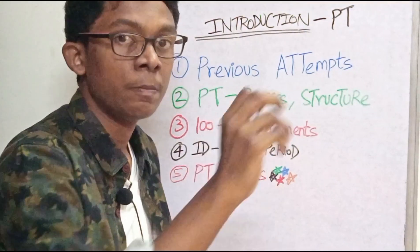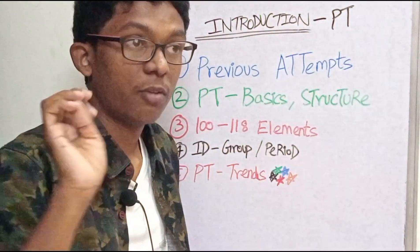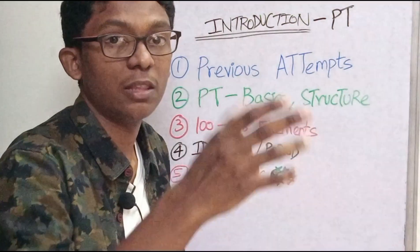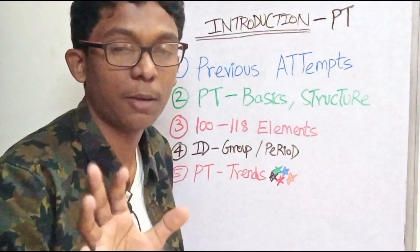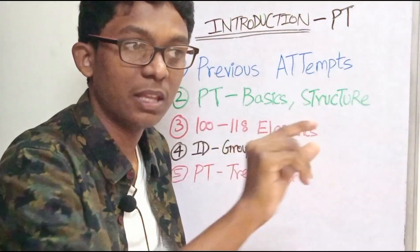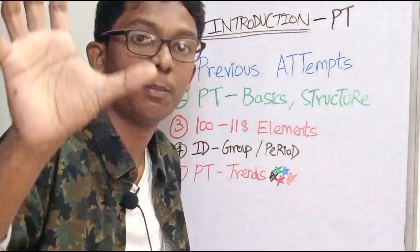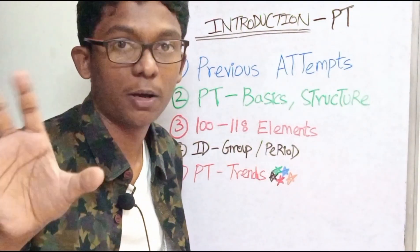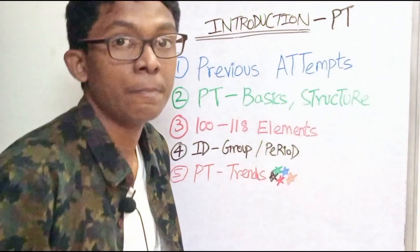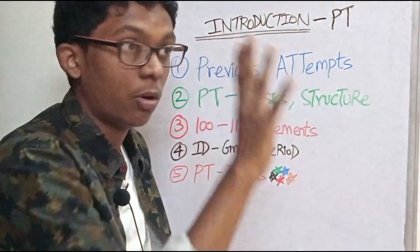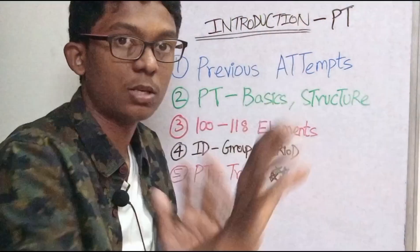Identification of group and period — that is using atomic number. For example, atomic number 54: where is it — in any group, in any period? So, how do you know the element? If you know the basic structure of the periodic table, you can answer that.